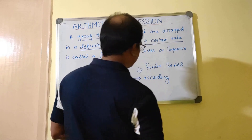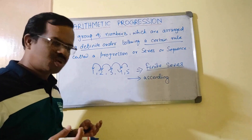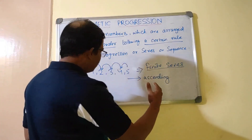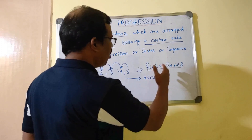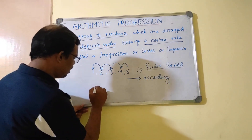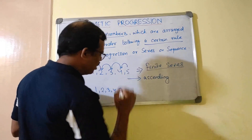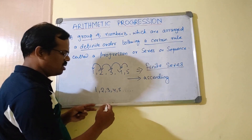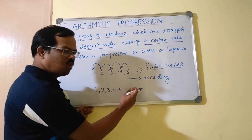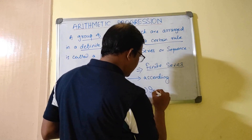Here there are only five numbers and therefore it is called a finite series. Remember the term 'finite series.' There is also the possibility that infinite numbers can be arranged in an order to form a series. For example, one, two, three, four, five, dot dot dot — this implies that six follows next, then seven, and there is no end point. Such a series is called an infinite series.